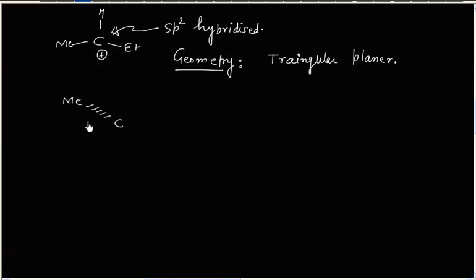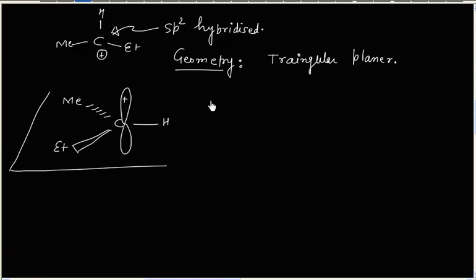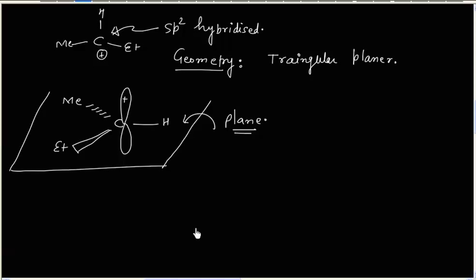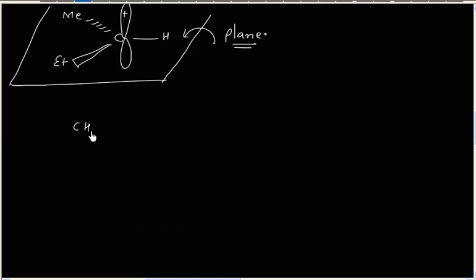We can show the carbocation with an empty p lobe — it is planar. We have a plane: one bond goes inside the blackboard plane, one is coming outside the blackboard plane, and one is in the blackboard plane. Now let us consider the next step, which involves nucleophilic attack by Br⁻.